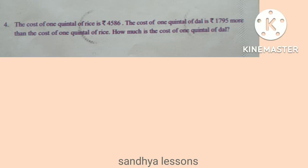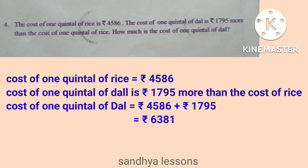Problem 4: The cost of one quintal of rice is Rs. 4,586. The cost of one quintal of dal is Rs. 1,795 more than the cost of rice. Solution: Cost of one quintal of rice is Rs. 4,586. Cost of one quintal of dal is 4,586 plus 1,795, that is equals to Rs. 6,381.